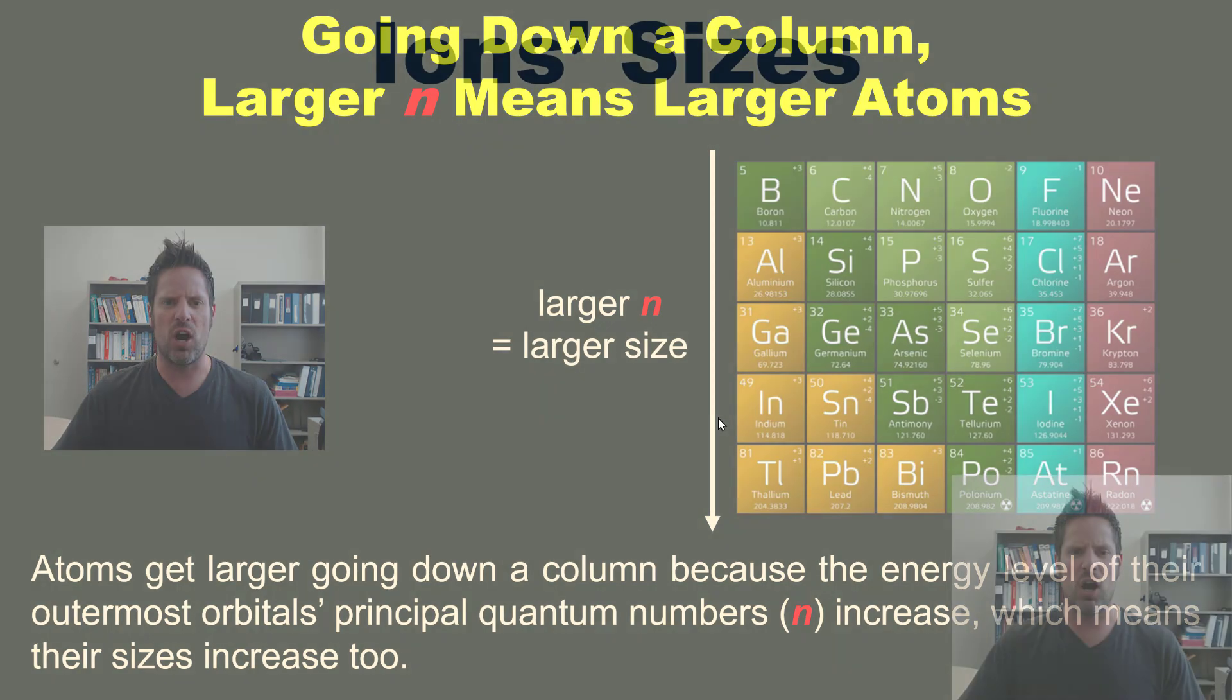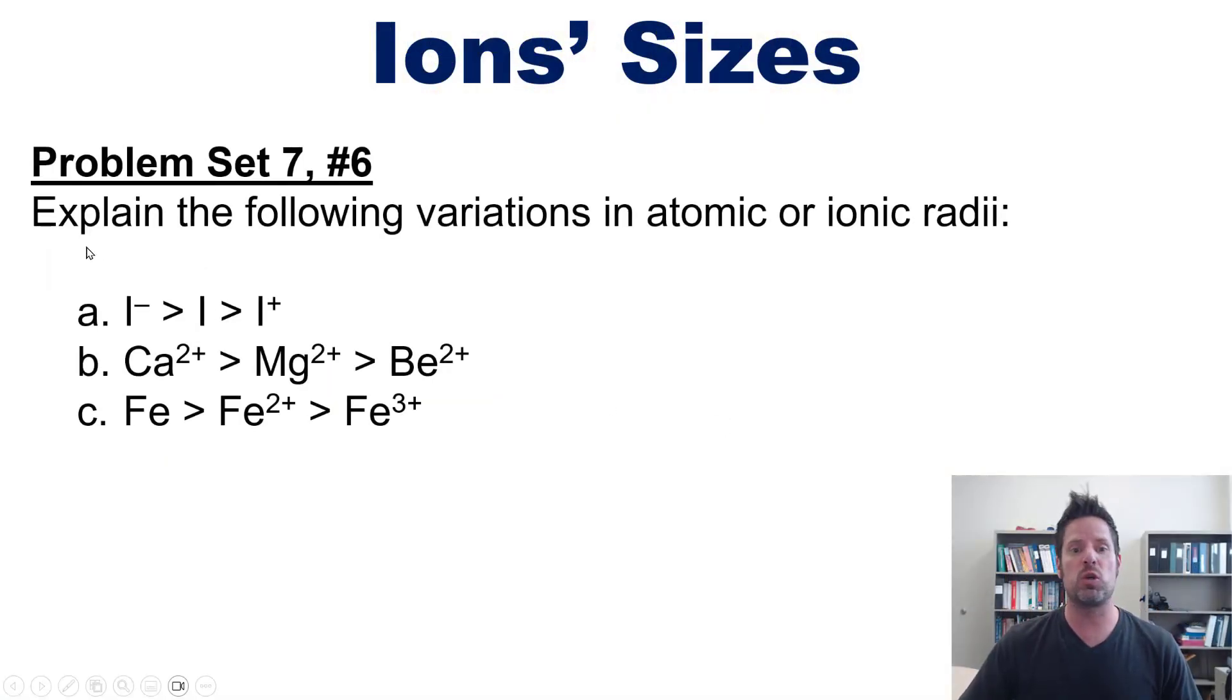We now have enough knowledge to take on an example problem. I would like you to explain the following variations in atomic or ionic radii. That is, the radii or sizes of ions. I invite you, of course, to try this on your own. And if you like, I've got a link in the description below or floating over my head somewhere to a separate video in which I talk you through the answers.